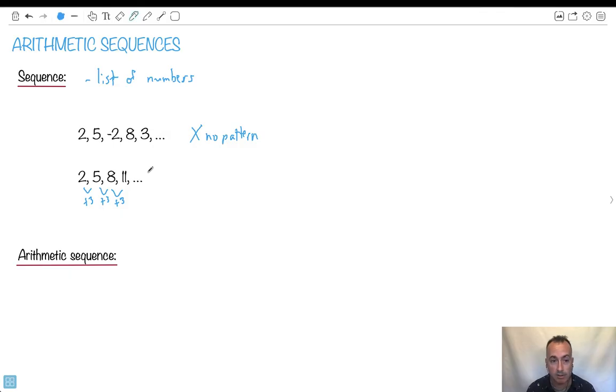You don't have to be a math genius to figure that out. 11, let's see, 12, 13, 14, and so on. This pattern would continue forever. That's why we put the dot, dot, dots. So this one right here, we do have a pattern. The pattern is add 3.